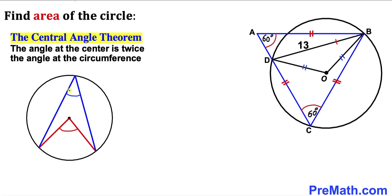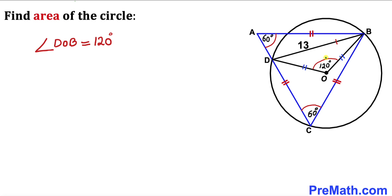For example, if the angle at the circumference is 25 degrees, then the angle at the center is 50 degrees. In our problem, the angle at the circumference is 60 degrees, so the angle at the center is twice that — 120 degrees. Therefore, angle DOB is 120 degrees.